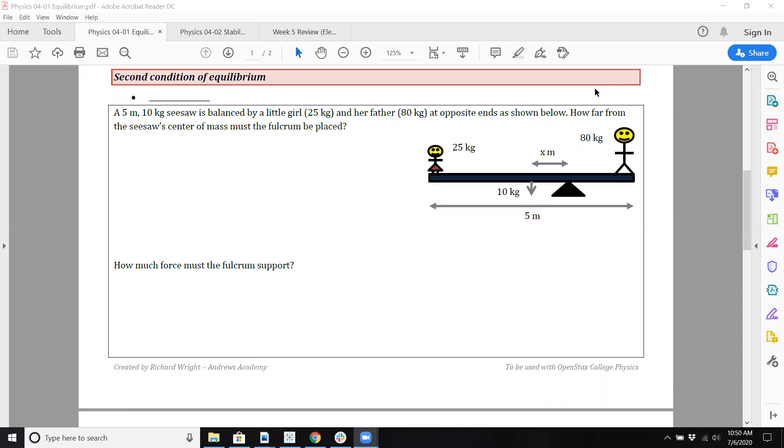Okay, so your net torque is going to be zero. Let's talk about this: a 5-meter, 10-kilogram seesaw is balanced by a little girl that obviously weighs much less than her father, or has less mass than her father, at the opposite end. How far from the seesaw center was the fulcrum placed?